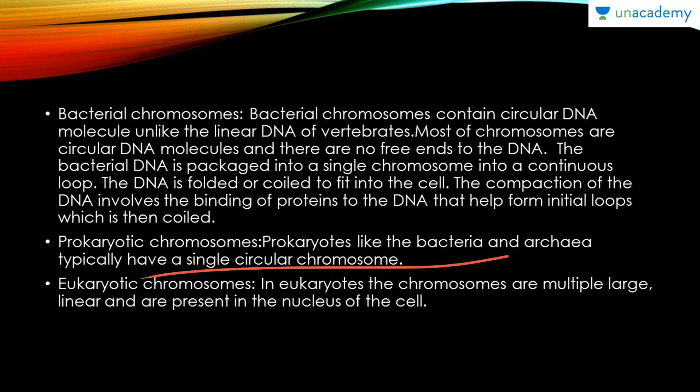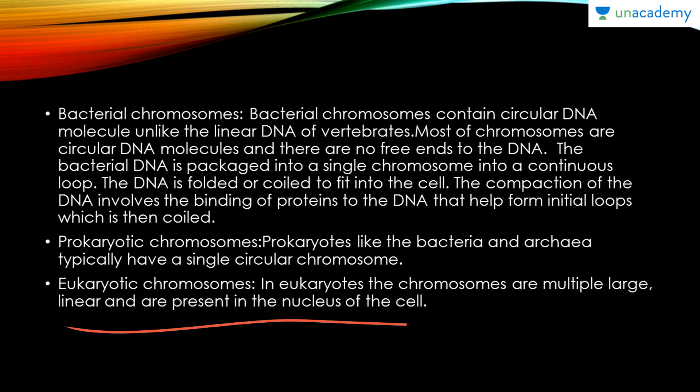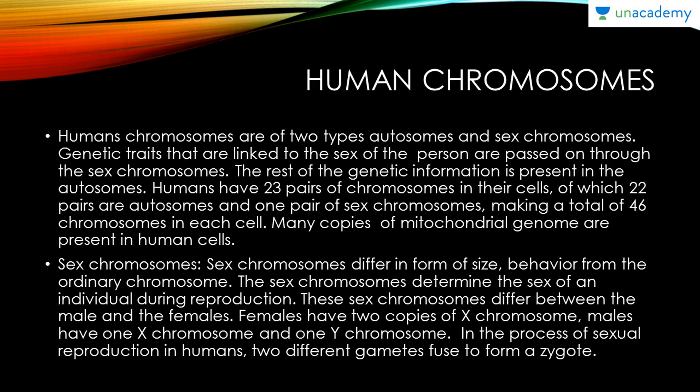In eukaryotes, chromosomes are multiple, large, and linear, and are present in the nucleus of the cell. Humans, for example, have 23 pairs of chromosomes.